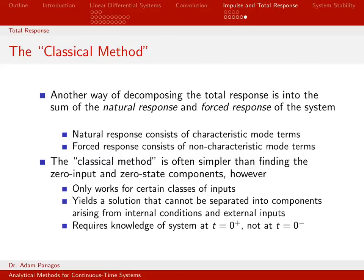Another way of finding the total response of the system is what we call the classical method. This might be the way that you would have done this in a normal differential equations class. It also decomposes the total response into two pieces: the natural response and the forced response of the system. The natural response — that's the quantity y_n(t) — consists of the characteristic modes of the system. We've actually done that; we formed y_n(t) by taking the linear combination of the characteristic modes.